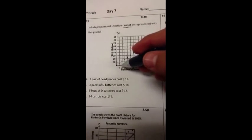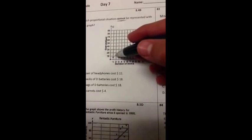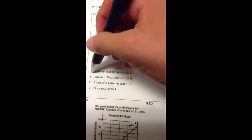There's three right and one wrong. Letter A says two pair of headphones cost about $12. So two goes up, about over 10, and it looks about 12. That seems right, so let's cross that one out.